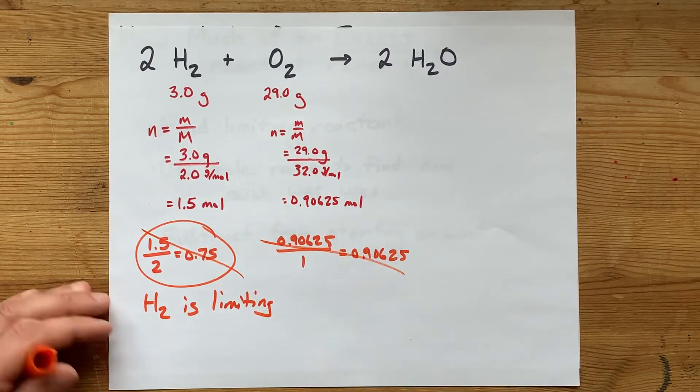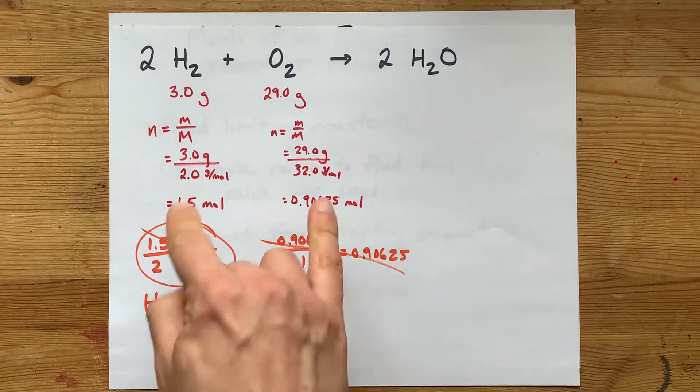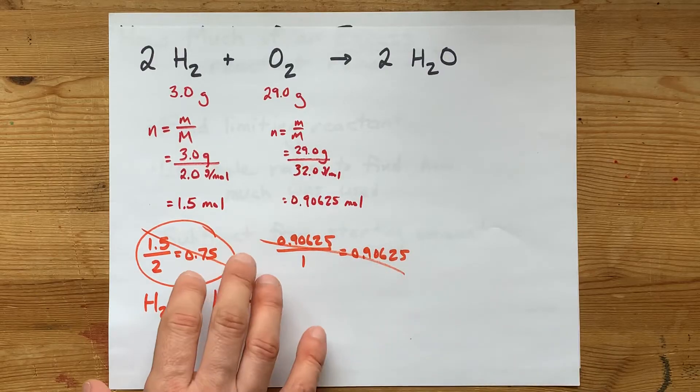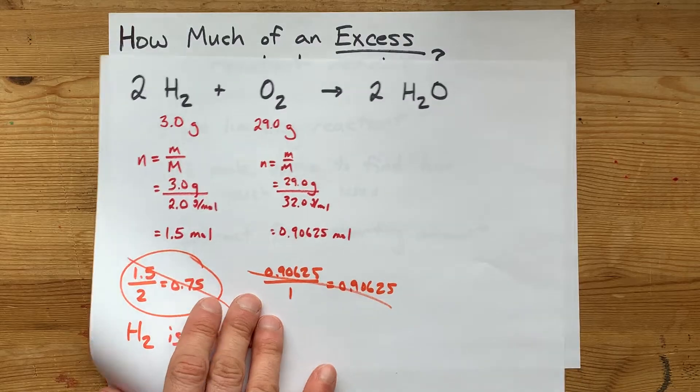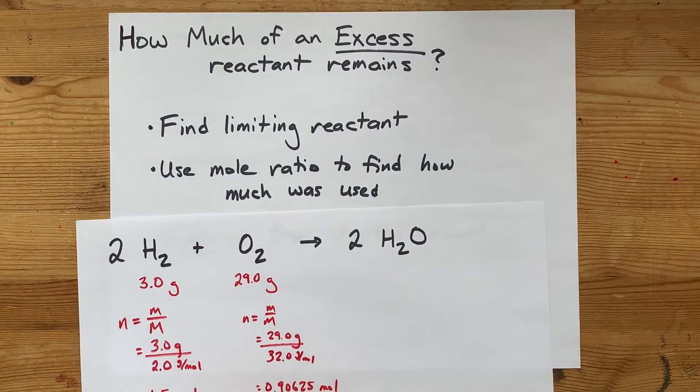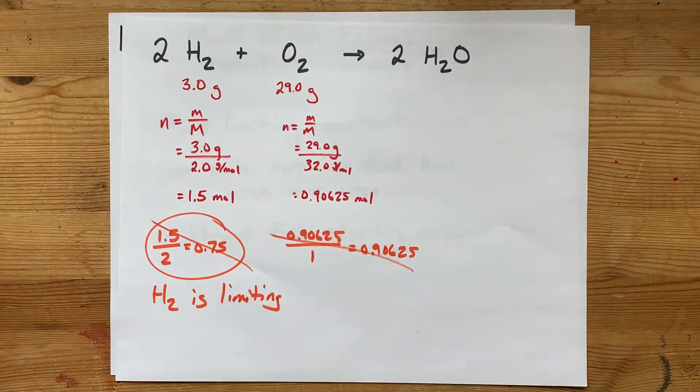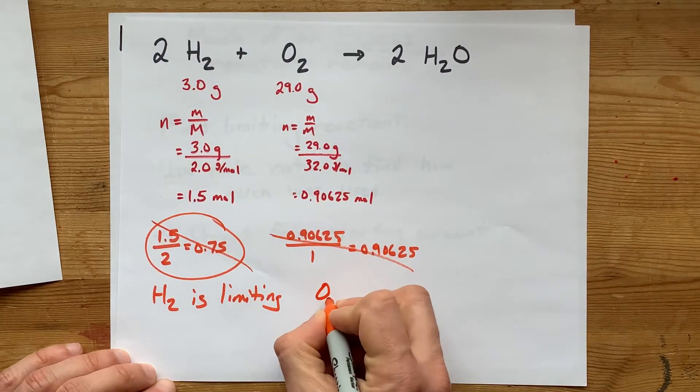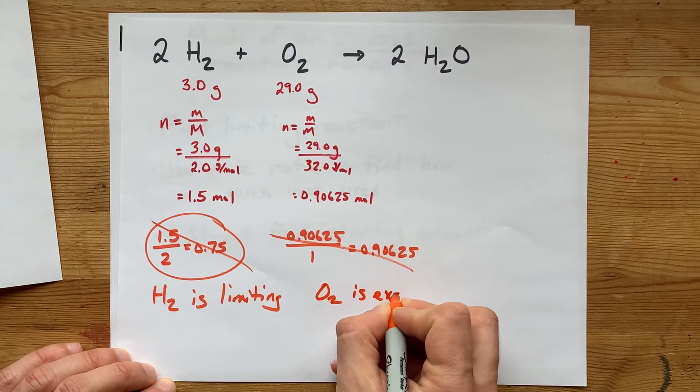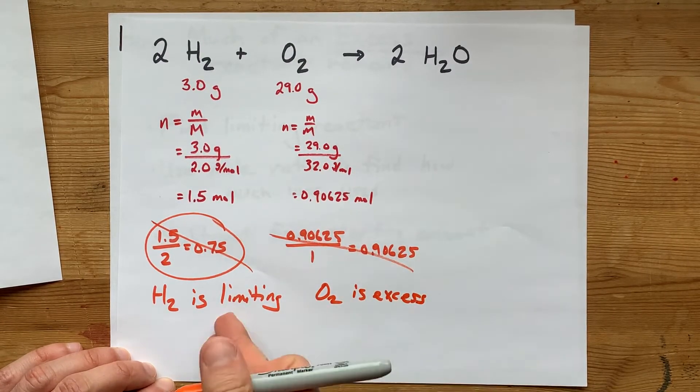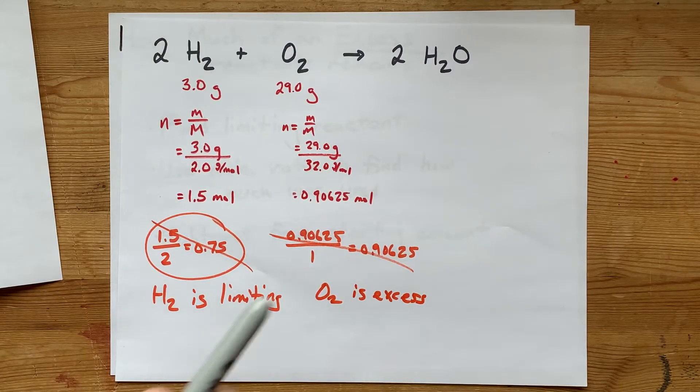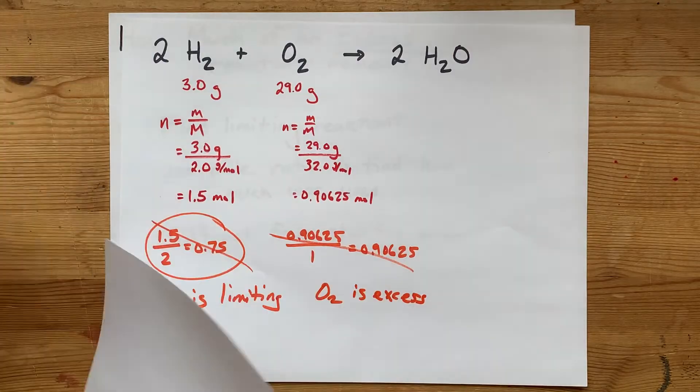Now, personally, I discard these calculations once I've done that. I'm only doing that to figure out which one is limiting. Now, we've got to use a mole ratio to figure out how much of the excess reactant, which, by the way, is O2, anything that's not limiting is excess, how much of that is actually getting used up.